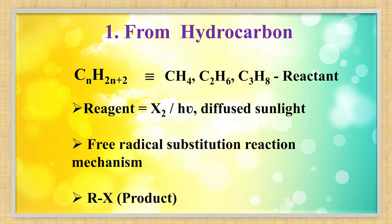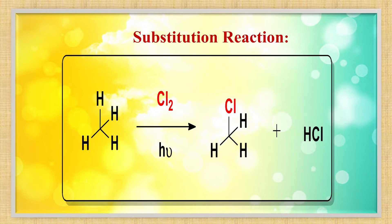But how can you do this? By using some reagent. The reagent in this case is halogen and diffused sunlight or ultraviolet light, and the mechanism which follows this reaction is free radical substitution reaction. The product we get is the haloalkane or RX.